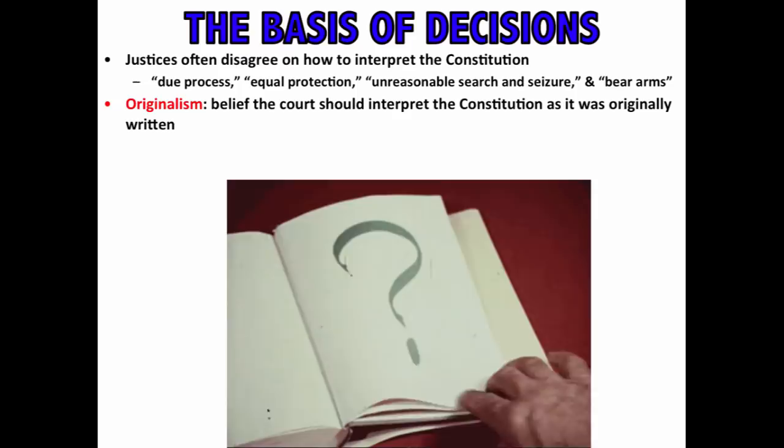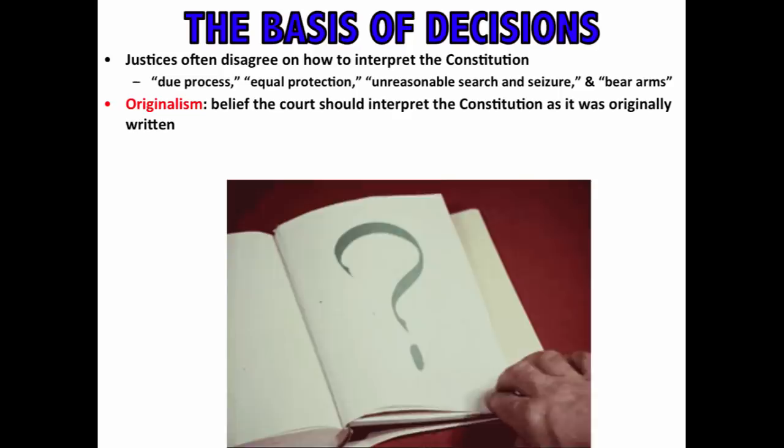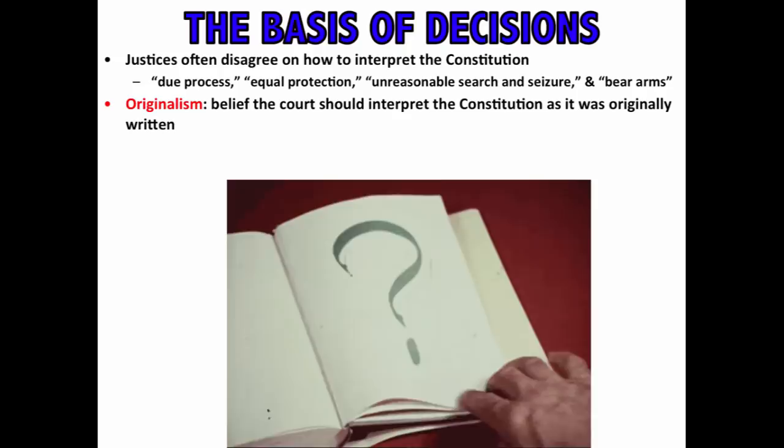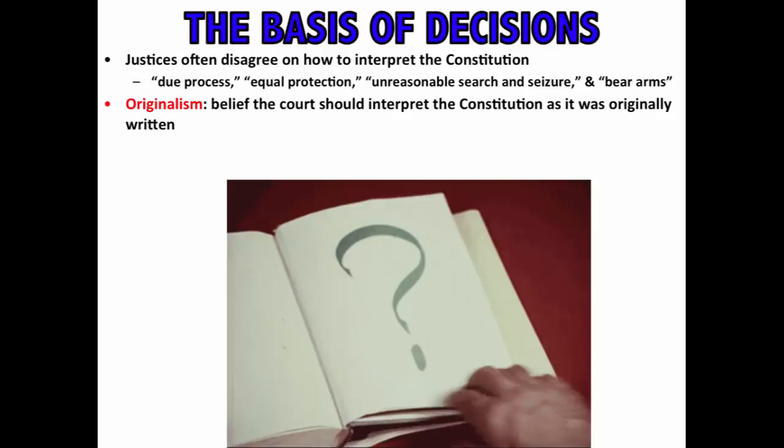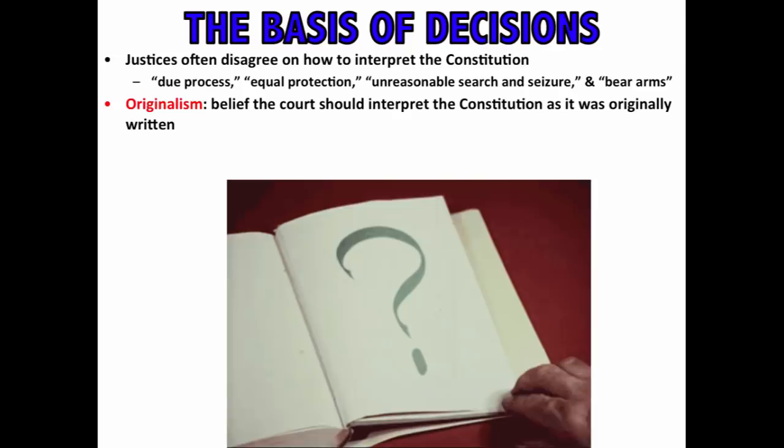One key term is originalism — the belief that the court should interpret the Constitution as it was originally written. People who favor this view want judges to follow literally what the words in the Constitution say, as the framers intended. This view is typically held by some conservatives who do not like the broadening of federal government power, and they believe if you want to change the Constitution, you must follow the amendment process outlined in Article 5.